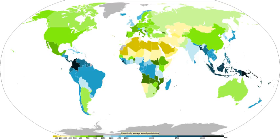A wide variety of weather can be found along an occluded front, with thunderstorms possible, but usually their passage is associated with a drying of the air mass. Occluded fronts usually form around mature low-pressure areas. Precipitation may occur on celestial bodies other than Earth; when it gets cold, Mars has precipitation that most likely takes the form of ice needles, rather than rain or snow.